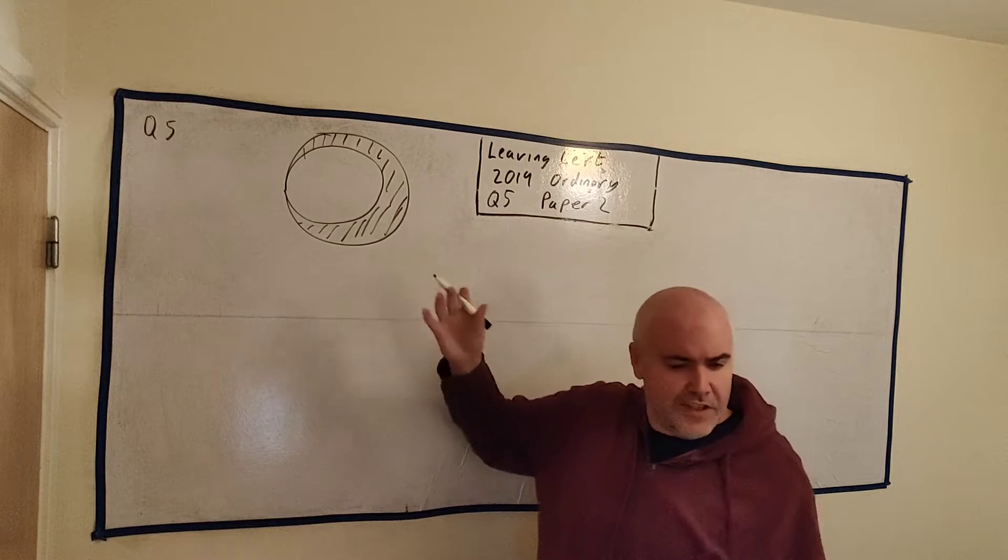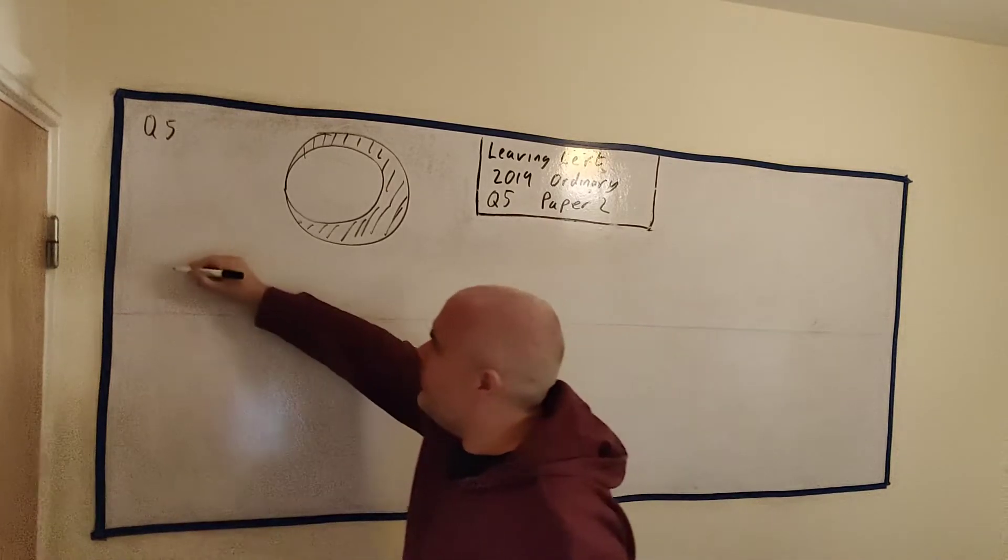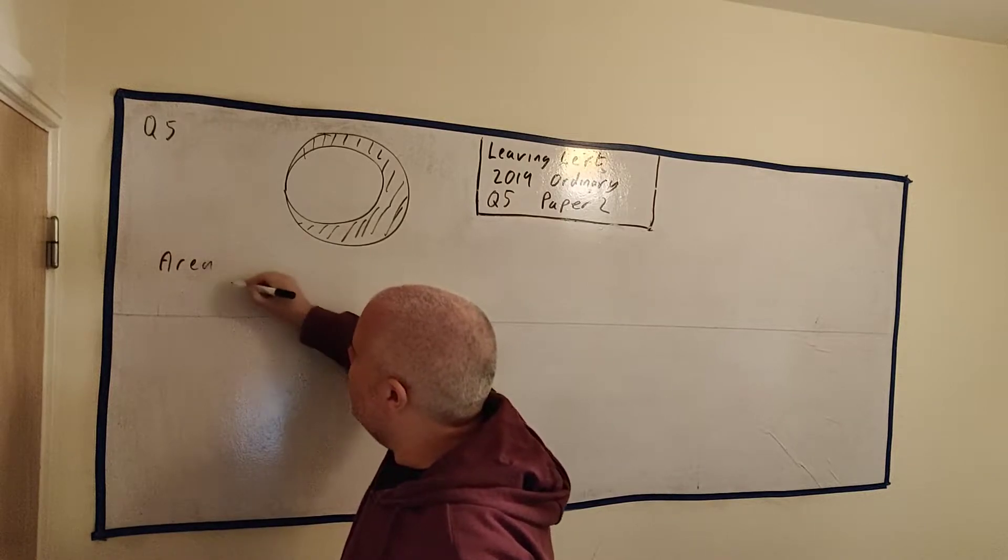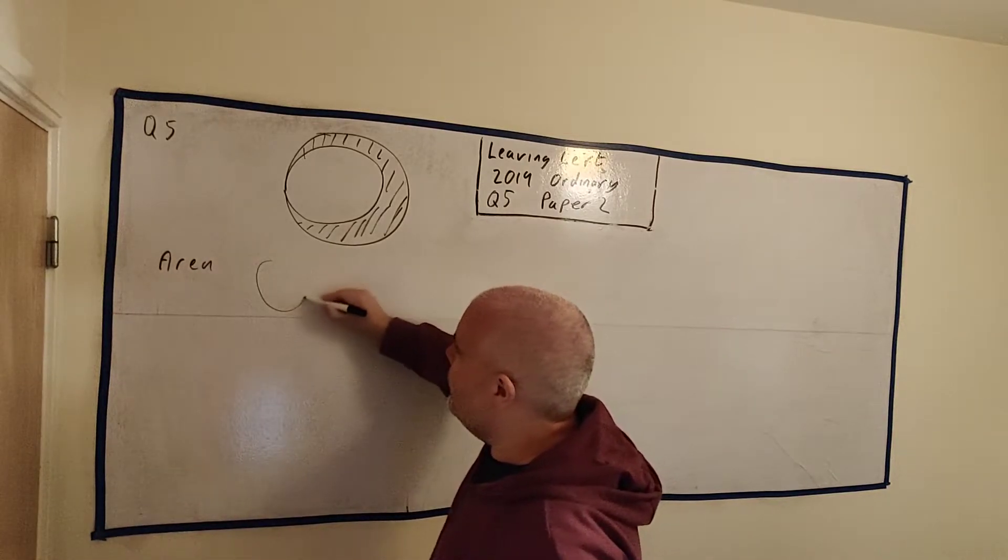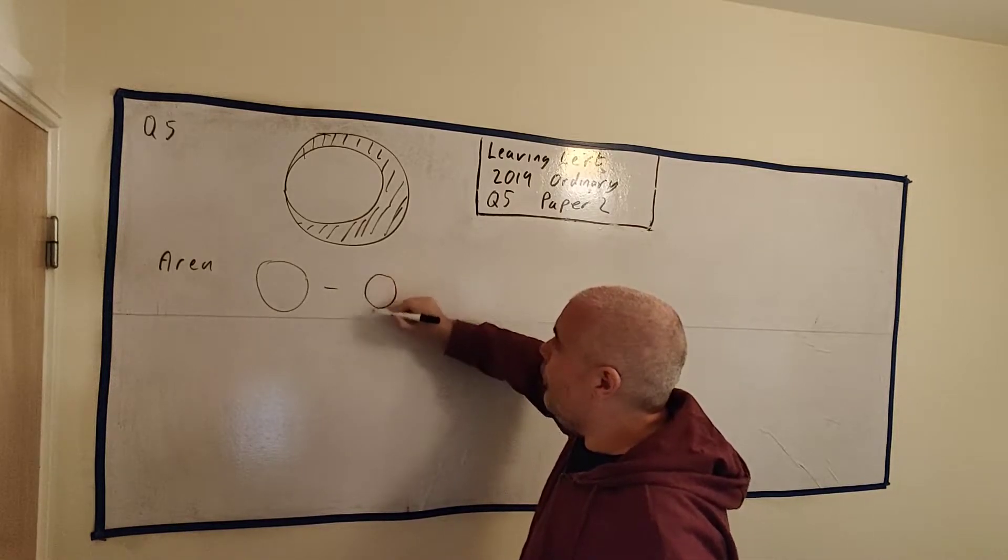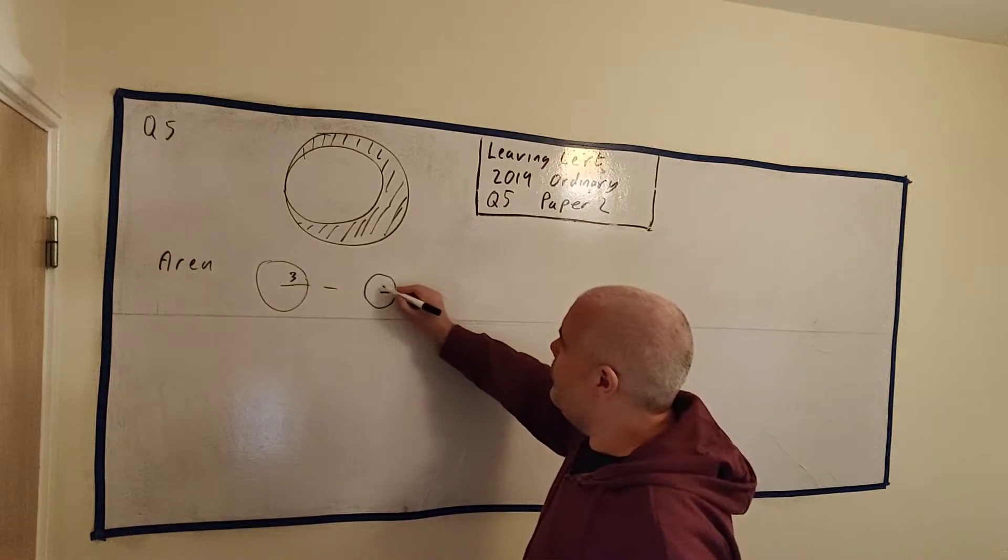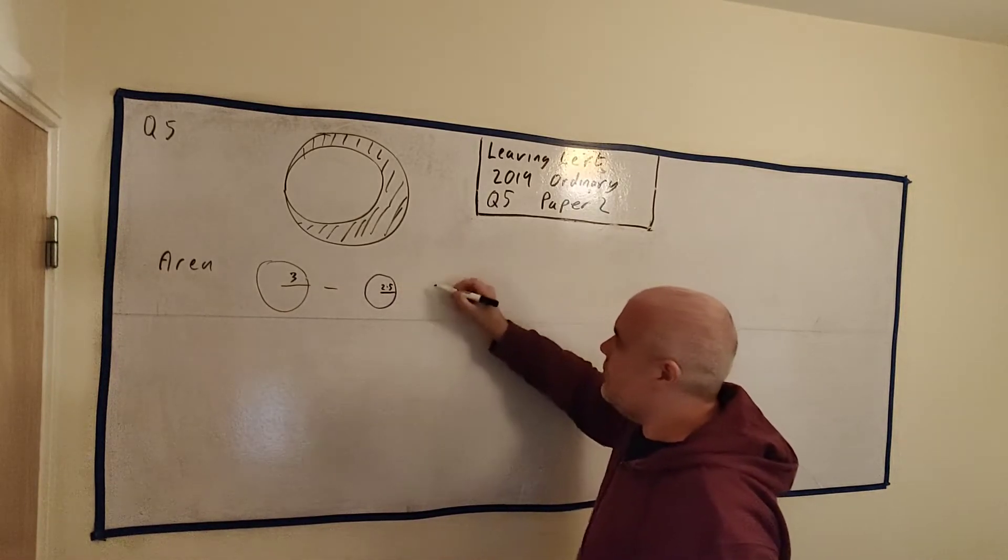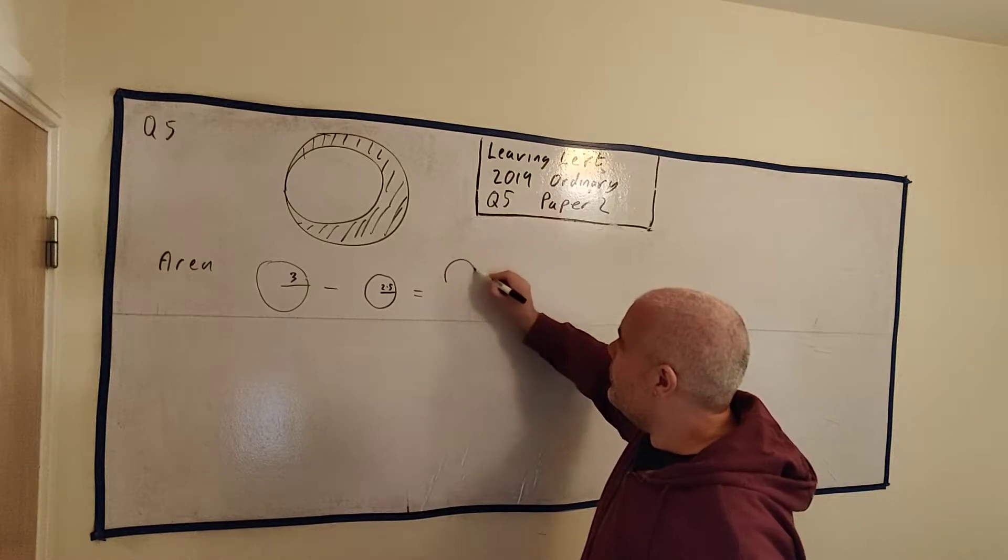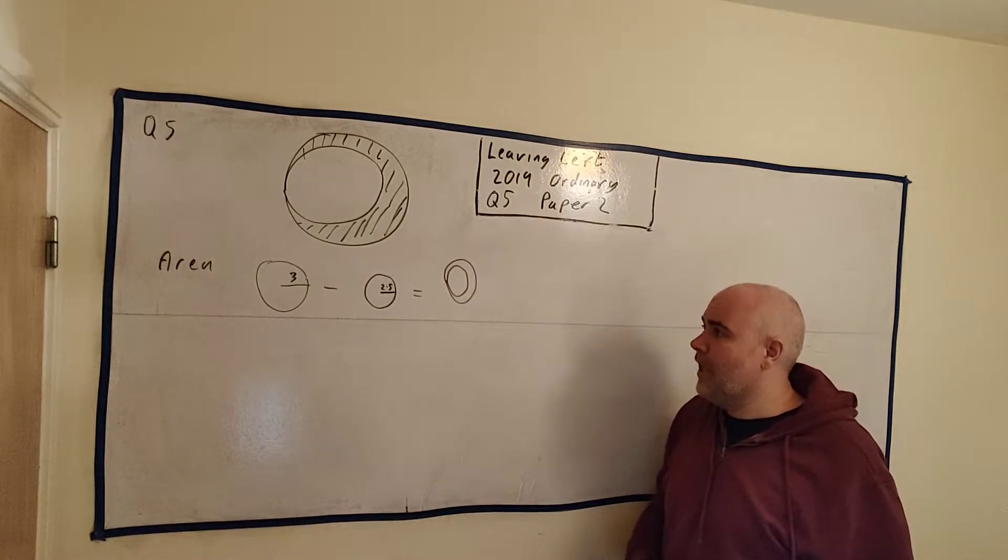This question asks us to find the area and perimeter of this crescent, this shaded shape here. It tells us the radius of these two circles. So really what they're asking us, let's do the area first. One way to look at this is they're asking us to take this circle minus this smaller circle. So this is 3 centimeters, and this one is 2.5 centimeters, and that will get us this crescent here.